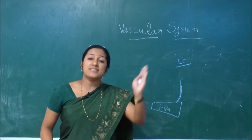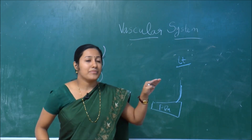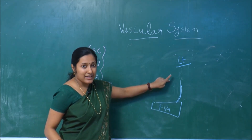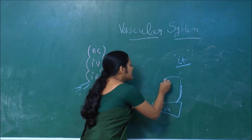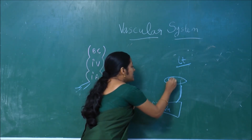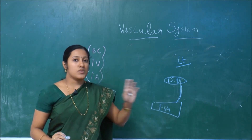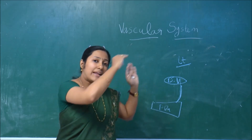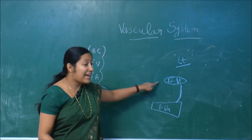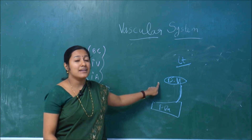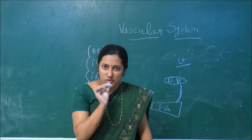From the placenta, through the left umbilical vein, the oxygenated blood reaches the fetal heart. While doing so, this left umbilical vein helps in the formation of another structure called the ductus venosus. So in the course of the left umbilical vein, it helps in the formation of the ductus venosus — similar to the ductus arteriosus.